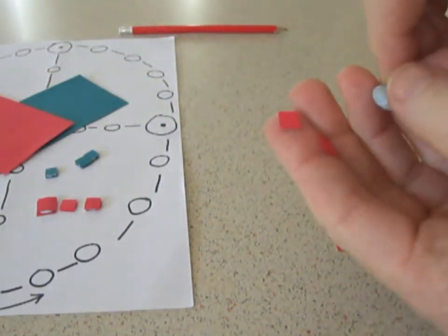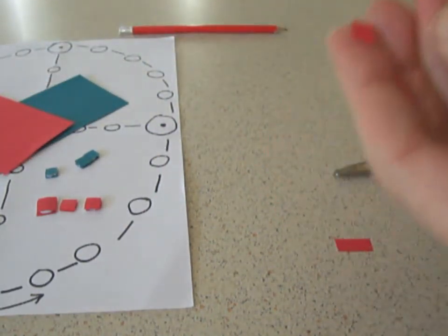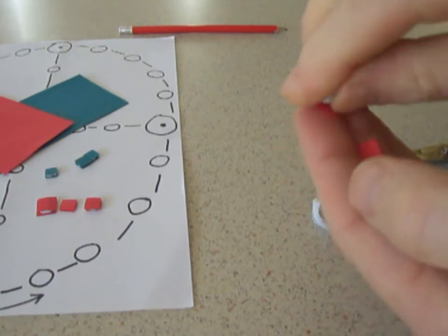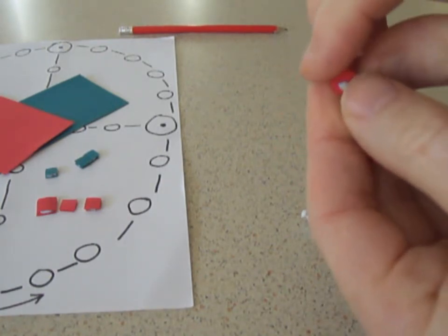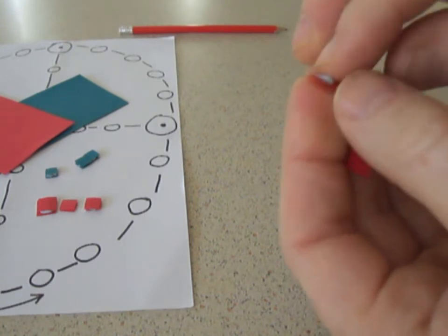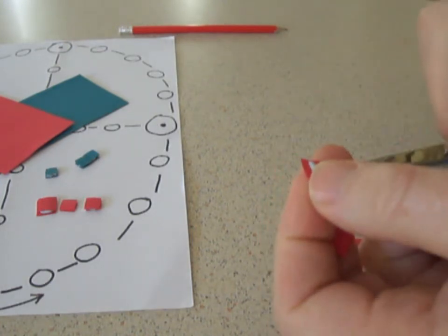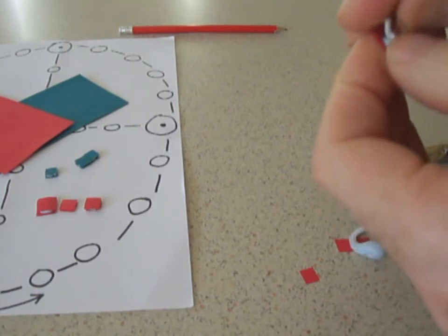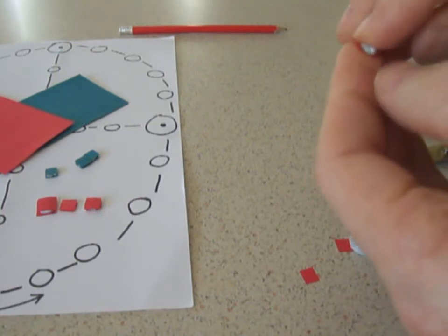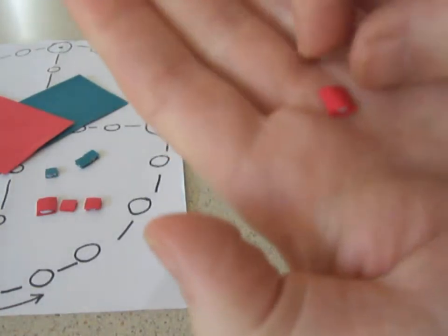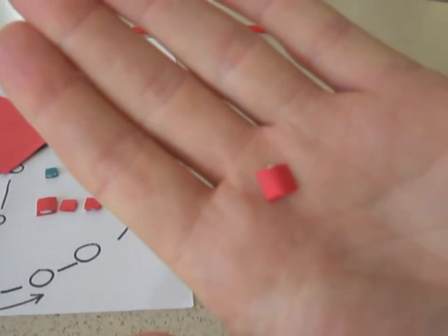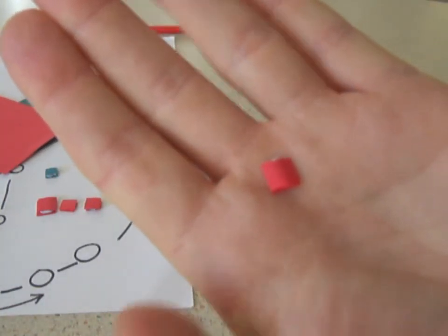Grab a small piece of blue tack and pop it on there. The amount of blue tack you use will determine the thickness of the counter. You want it reasonably thick so it's easy to pick up. And that's it. That's your counter. Simple.